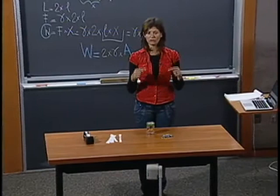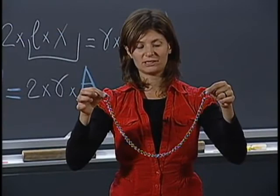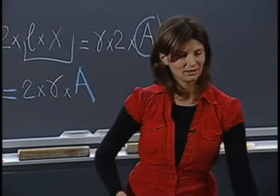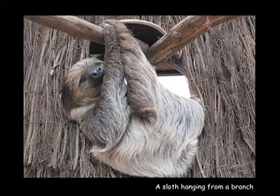Well, this is a catenary. It's the shape taken by a chain when it's free to hang out and all the forces are uniformly distributed. A catenary is very common in nature. You can see, for example, this image of this nice mammal called the sloth that is hanging from a branch. And its spine actually makes a catenary.